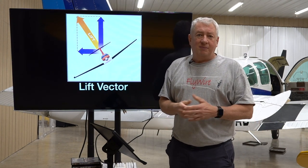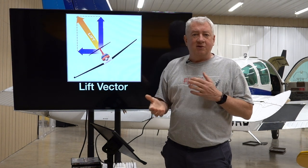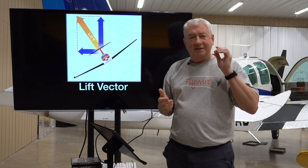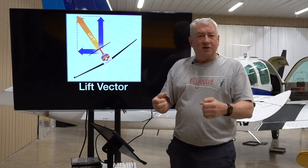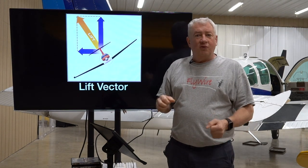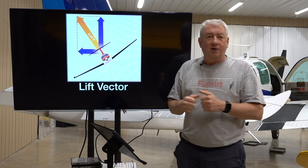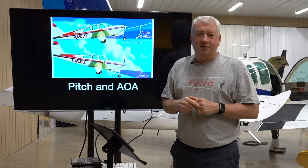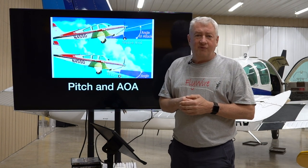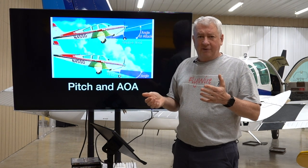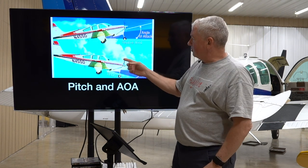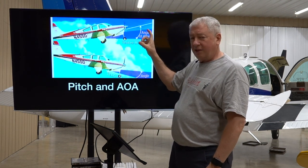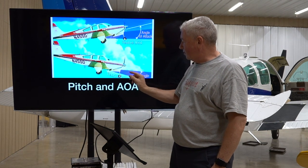This is actually how an airplane flies: as long as the lift vector is positive and above the horizon, we stay in the air. The pilot controls the magnitude of the vector with the elevator, and also controls the orientation of the lift vector with the aileron and rudder. Let's talk about angle of attack — some folks call it alpha, that's the mathematical symbol for it. From this picture you can see that relative wind goes this way, and if we increase pitch, angle of attack goes up; if we decrease pitch, angle of attack goes down.